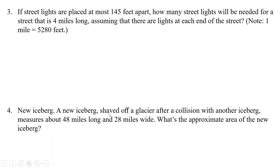All right. So what about this one? It says, if streetlights are placed at most 145 feet apart, how many streetlights will be needed for a street that is four miles long, assuming there are lights at each end of the street? Note, one mile is 5,280 feet. All right. So what do we have? Well, first we have four miles. And we need to know how many feet four miles is. So we have to take our conversion here, 5,280 feet times four, because we have four miles. And so when we do that, that will give us the number of feet there are in the total of four miles.